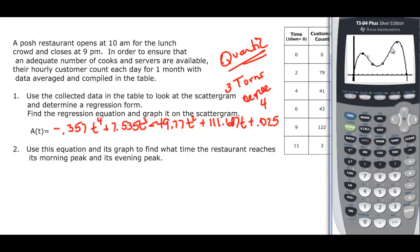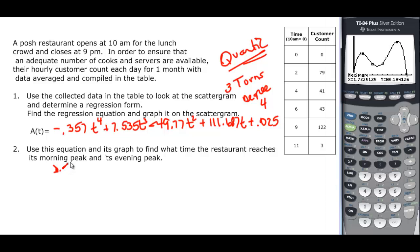So it says use this equation and this graph to find what time it reaches its morning peak and its evening peak. Well, those are going to be the maximum points here. So 2nd, trace, and max is 4. And we need to be to the left of one of our maxes and then to the right of it. And when we do that, it's going to give us a nice number, enter, and then go to the other side, and enter, enter for the guess. And it says 1.72.